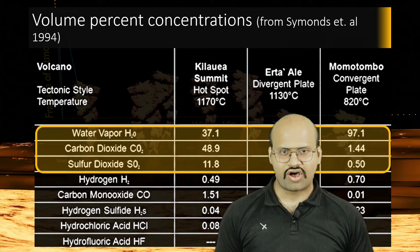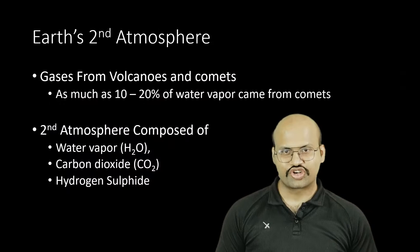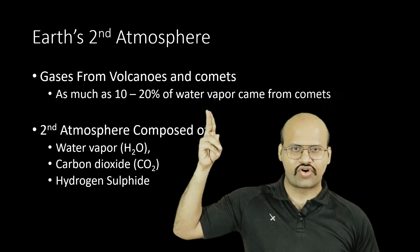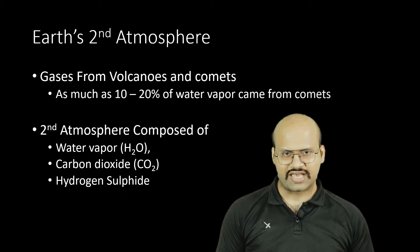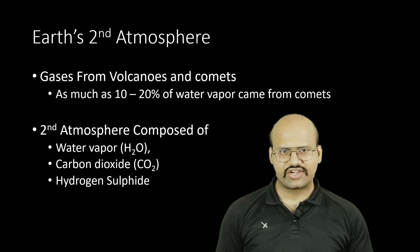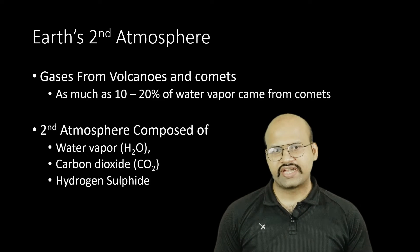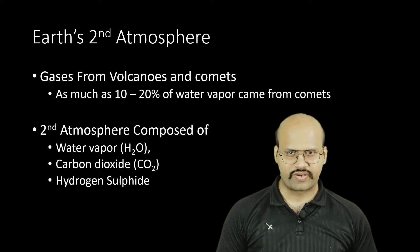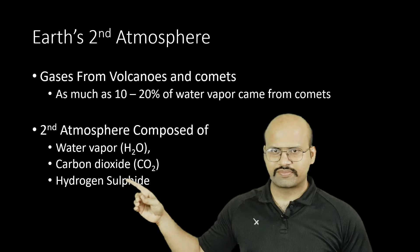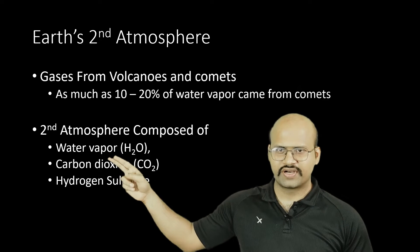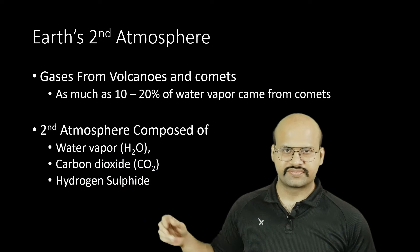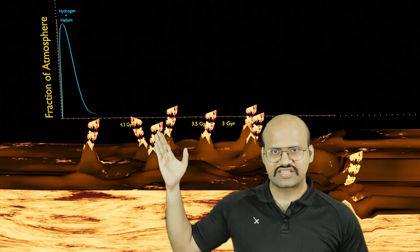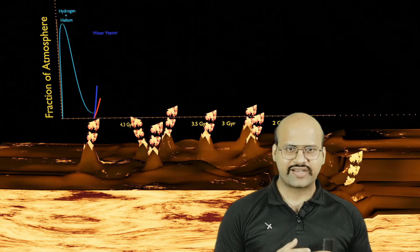Some part of the gases in the second atmosphere were also contributed by comets, with as much as 10 to 20 percent of water vapor coming from them. So the second atmosphere mainly consisted of water vapor, carbon dioxide, and hydrogen sulfide. This continuous emission of gases from volcanoes increased the amount of water vapor and carbon dioxide in the atmosphere.